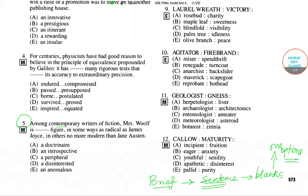This particular question says: 'Among the contemporary writers of fiction, Mrs. Woolf is — blank — figure, in some ways as radical as Jane, in other no more modern than Jane Austen.' We have been provided with five options: droped-in-air, introspective, peripheral, disinterested, and the last one is anomalous.